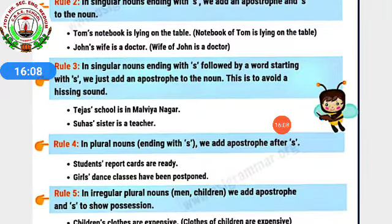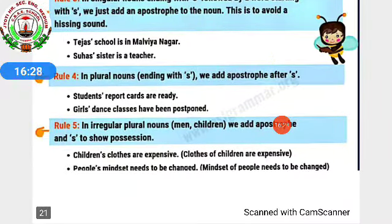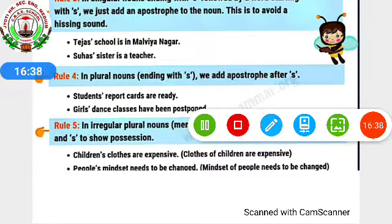Next rule: in plural nouns ending with s, we add apostrophe after s. Like 'students' report cards are ready' — students apostrophe, because it is a plural noun and a possessive noun. 'Girls' dance classes have been postponed' — girls apostrophe, plural possessive. In irregular plural nouns — men, children — we add apostrophe and s to show possession, like 'children's'. Children is already plural, but we put apostrophe s for the irregular plural noun.